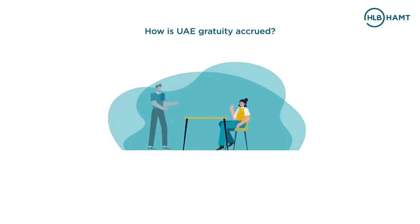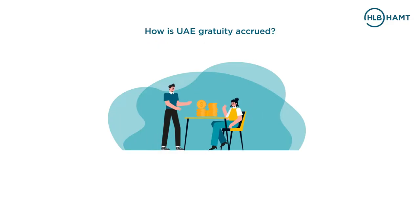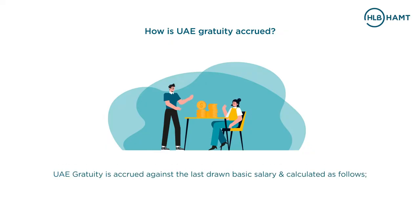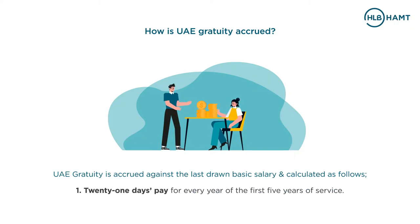How is UAE gratuity accrued? UAE gratuity is accrued against the last drawn basic salary and calculated as follows: 21 days pay for every year of the first five years of service, and 30 days pay for every additional year.